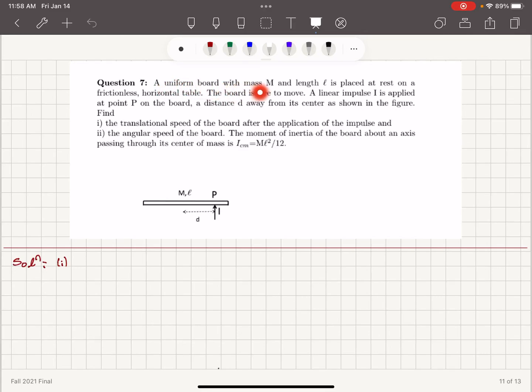A uniform board with mass capital M and length L is placed at rest on a frictionless horizontal table. The board is free to move. A linear impulse is applied at point P on the board, a distance d away from its center as shown in the figure.